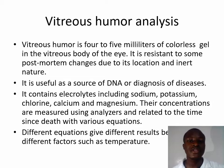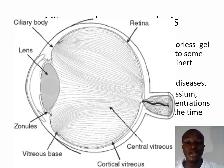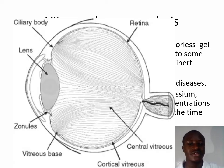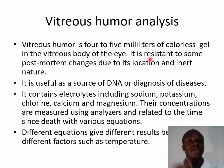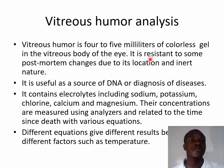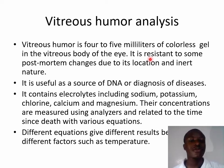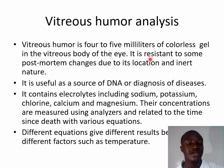For example, we can use vitreous humor analysis. The vitreous humor is a four to five milliliter colorless gel found in the eye. It is resistant to post-mortem changes due to its location and inert nature. The eye is one of the biologically privileged areas where most pathogens cannot access, so we can use the vitreous humor to determine the time of death. It is also useful as a source of DNA or in the diagnosis of disease.